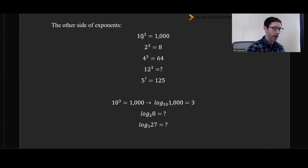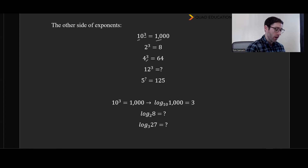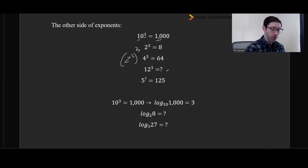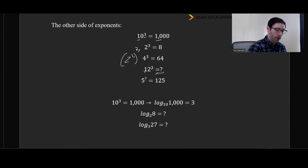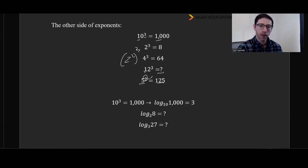Usually what we do with exponents is we have a number, we raise it to a power, and we get an output. We know that 10 cubed is 1000, and 2 cubed is 8. What we're doing with logarithms is different. Instead of having a number and an exponent where the issue is finding the output, we have a base and an output, and we need to know what the exponent is. In exponents, we are output hunting. In logarithms, we are exponent hunting.